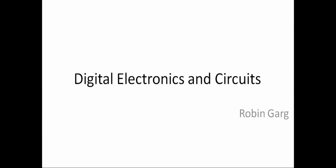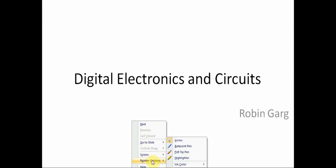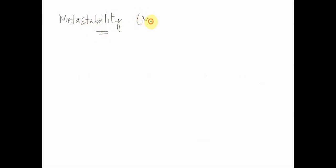Hello everyone, welcome to this lecture of the course Digital Electronics and Circuits. In this lecture we will talk about an important concept called metastability. To begin with, what is metastability or what is a metastable state? Basically, a metastable state is a state where a circuit is not able to settle at a stable zero or one logic level within the time required for proper operation of the circuit.